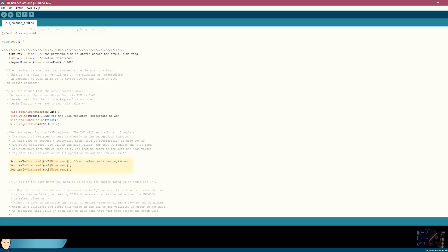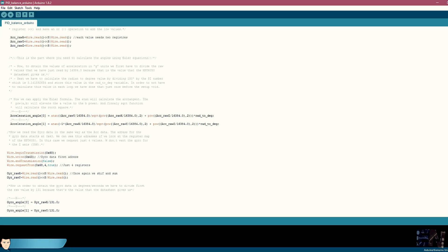Now, in order to convert these values to g's, we divide them by 16384 since this is the value that the module gives us for 1g acceleration. Using this Euler formula, we obtain the acceleration angles.